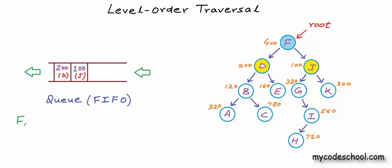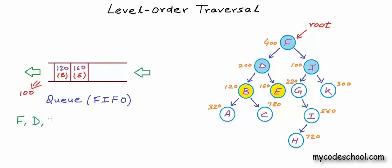So now we can dequeue and visit the node at address 200. Before I move on from this node, I need to enqueue its children. At this stage we have two visited nodes, three discovered nodes, and six undiscovered nodes. Now we can take out the next node from the front of the queue, visit it, and enqueue its children. If we go on like this, all the nodes will be visited in the order that we desire.